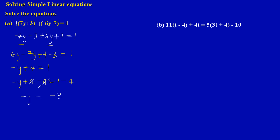In algebra, when solving for a variable, the variable must not be negative. I need to establish the coefficient of y — the number in front of y. Since it's y alone, it's really negative 1y, so the coefficient is negative 1. I divide both sides by negative 1: negative 1y divided by negative 1 gives positive y, and negative 3 divided by negative 1 gives positive 3. So y equals 3.